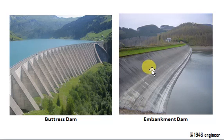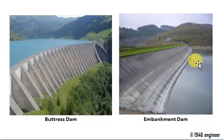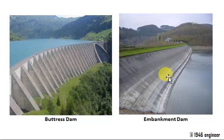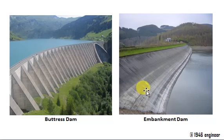Coming to embankment dam, this dam got its name because the section of this dam looks like an embankment — it looks like a hill — where you have a pervious core and an impervious core. This dam does not use concrete or asphalt as major ingredients; earthen matter is the main ingredient. These dams are again classified into earthen dam, rock fill dam, and tailings dam.